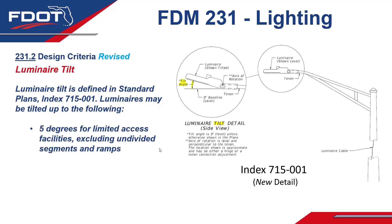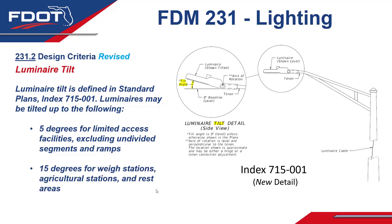As part of these revisions, usage has been updated in the FDM. Luminaires may be tilted up to the following: five degrees for limited access facilities, excluding undivided segments and ramps, and a higher tilt of 15 degrees for weigh stations, agriculture stations, and rest areas. This generally only includes limited access facilities and their usual roadside areas. Luminaire tilt is not permitted on arterials and collectors.